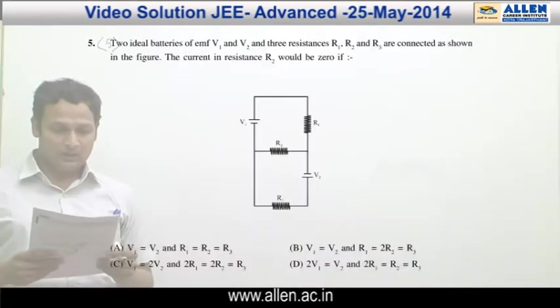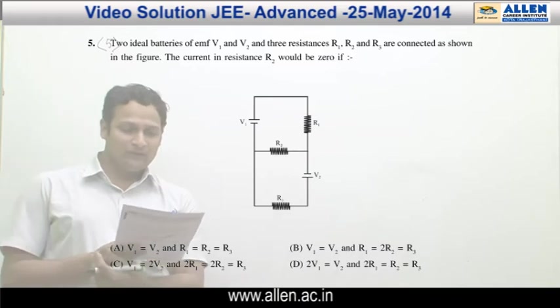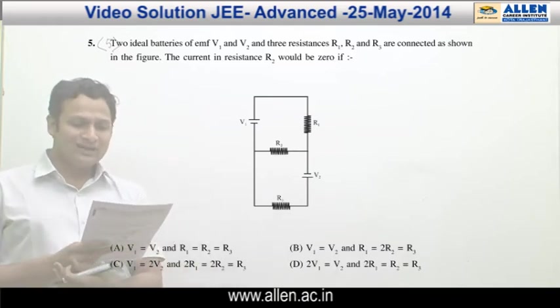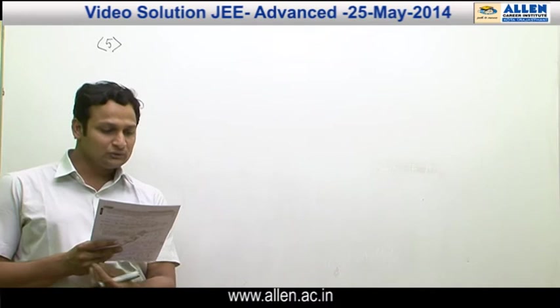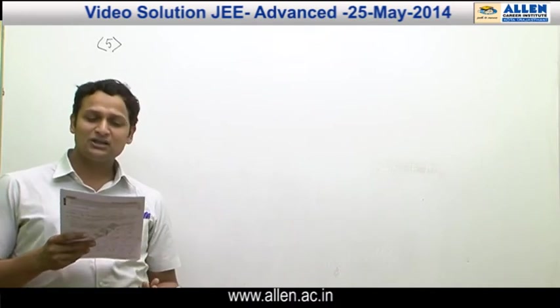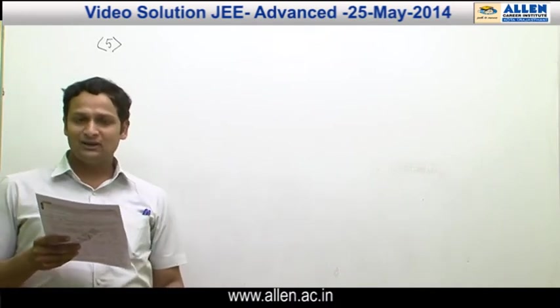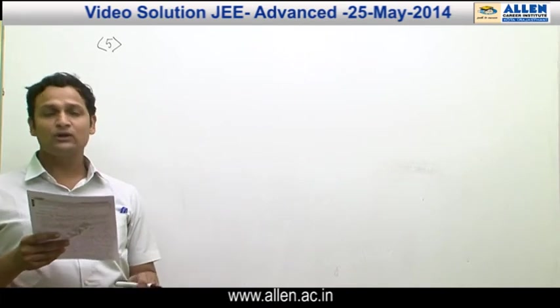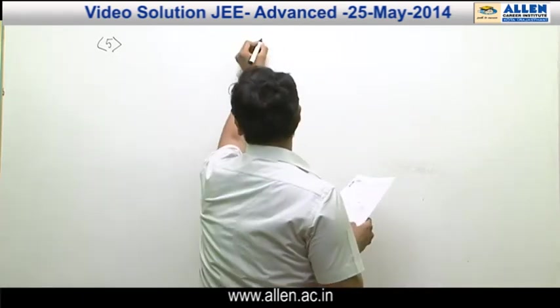Question number 5. Two ideal batteries of EMF V1 and V2 and three resistances R1, R2 and R3 are connected as shown in figure. The current in the resistance R2 would be 0. In the question, it is given that the current in R2 is 0. So if we draw the diagram.